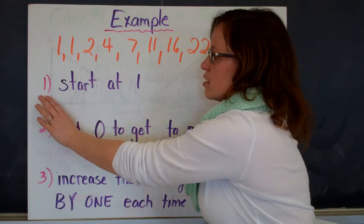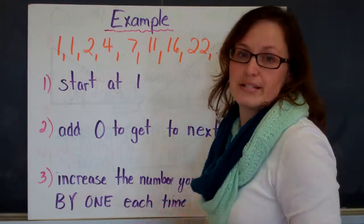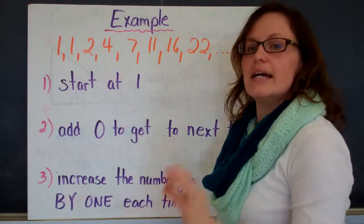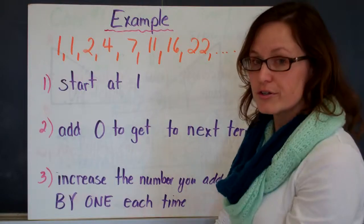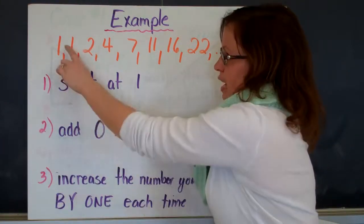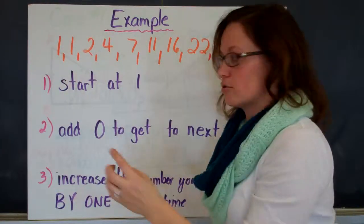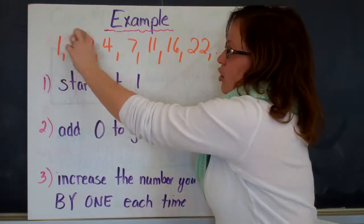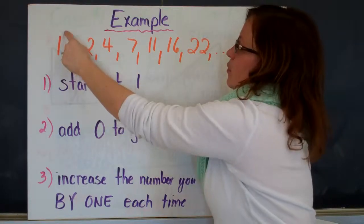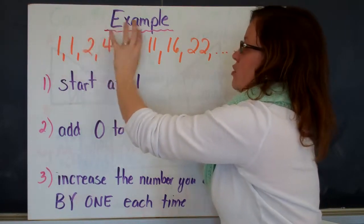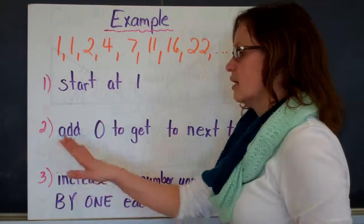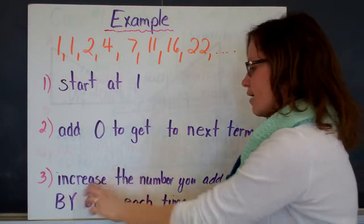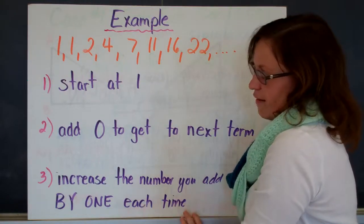Using words, our first step is to identify where we start: start at 1. Second is to say how we get from the first term to the second term, and we know we add 0 — so add 0 to get to the next term. We know that it increases by 1 each time: we add 0, then add 1, then add 2, then add 3, add 4, add 5, add 6. So we have to identify that in our third step: increase the number you add by 1 each time.